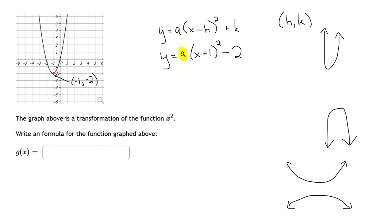But since this actually goes up higher, that tells you this number is probably bigger than 1 because it's a skinnier parabola. But you don't really have to know that in order to figure out the rest of this.